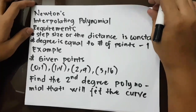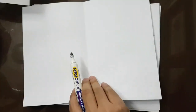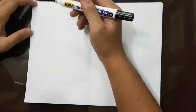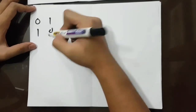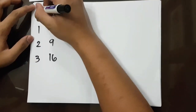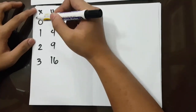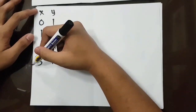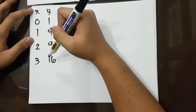I will now show you how to solve Newton's Interpolating Polynomial. Setting up the table: x sub 0 = 0, x sub 1 = 1, x sub 2 = 2, x sub 3 = 3. The corresponding y values are: y sub 0 = 1, y sub 1 = 4, y sub 2 = 9, and y sub 3 = 16.